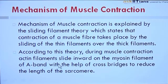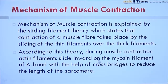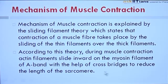If contraction has to happen, the actin filament will slide inward on the myosin filament. Actin is the thin filament; it will slide inward on the myosin filament — the thick filament — with the help of cross bridges. Cross bridges will be formed in order to reduce the length of the sarcomere.